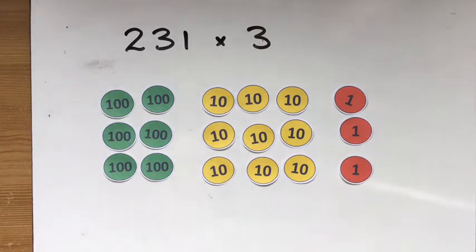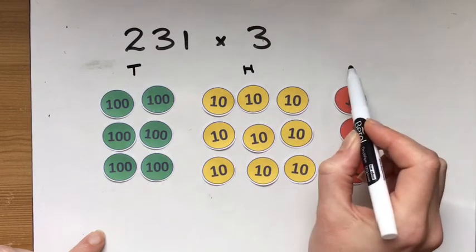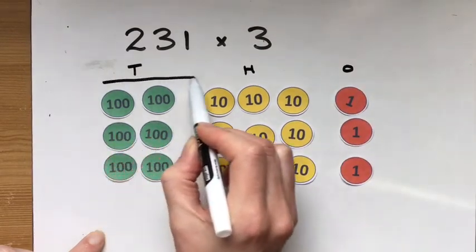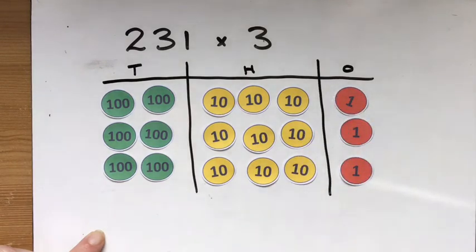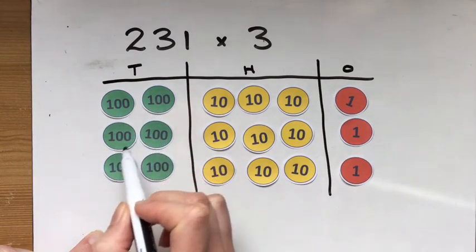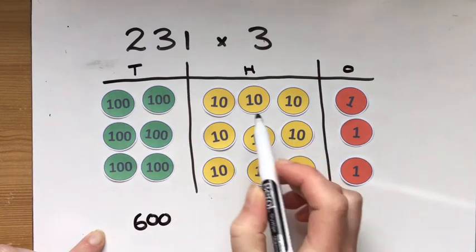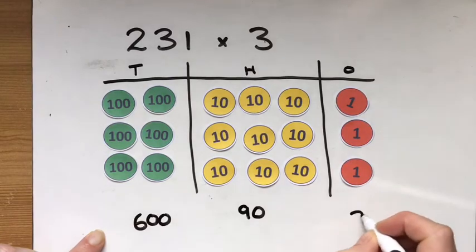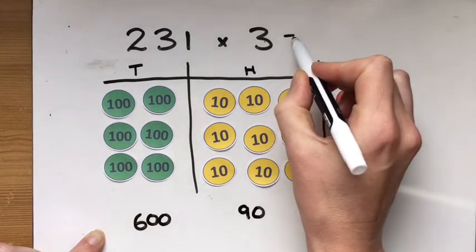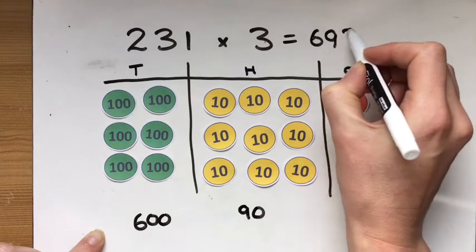Now I can see, I might not need my columns at this point, but I'll pop them in just now because they're helpful to just see how it works. And I can see that I've got one, two, three, four, five, six hundreds and ninety three. So 231 times three is six hundred and ninety three.